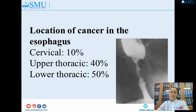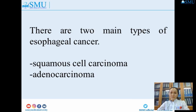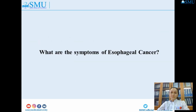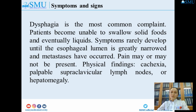Location of cancer in the esophagus. There are two main types of esophageal cancer: squamous cell carcinoma and adenocarcinoma. What are the symptoms of esophageal cancer? Dysphagia is the most common complaint. Patients become unable to swallow solid foods and eventually liquids. Symptoms rarely develop until the esophageal lumen is greatly narrowed and metastases have occurred. Pain may or may not be present.